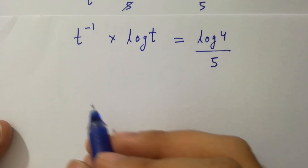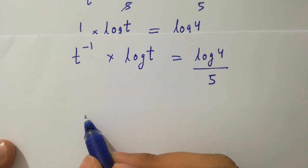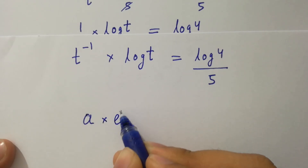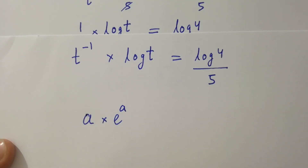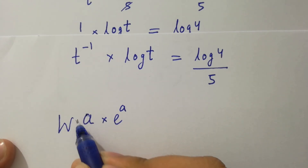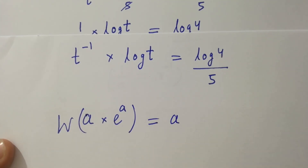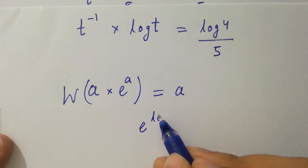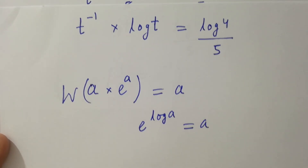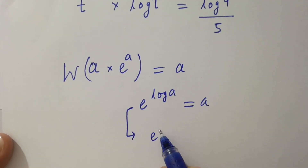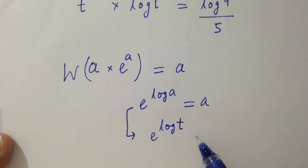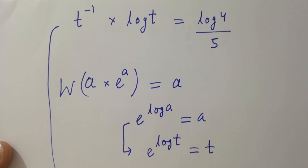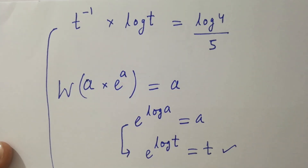By this, we can apply the Lambert W function, where W of a times e to the power a equals a. Also, since e to the power log a equals a, we have e to the power log t equals t. So we can write t equals e to the power log t.